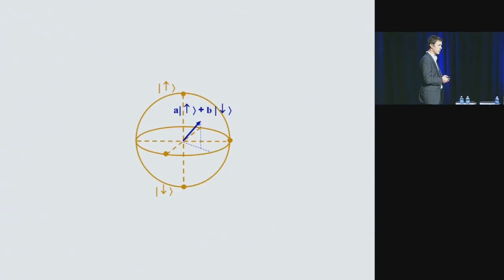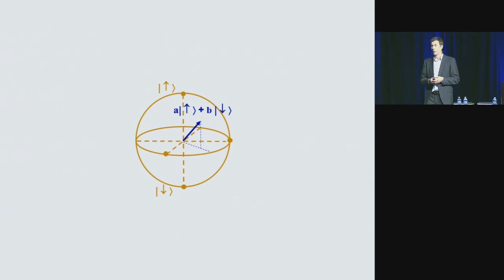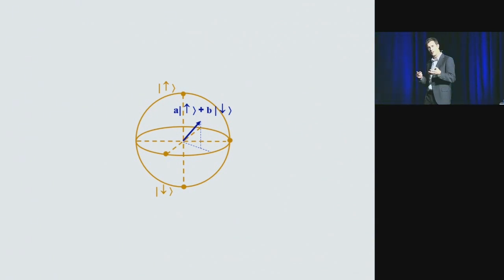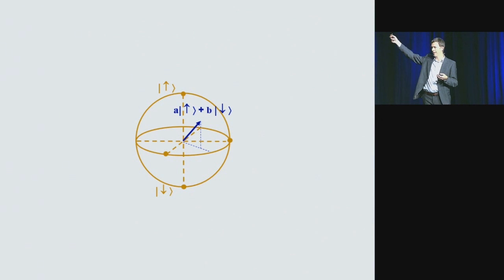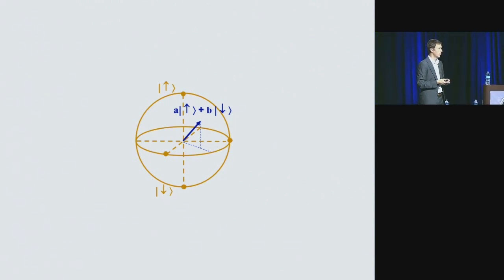The spin we spoke about 19 years ago can be thought of as the tiniest possible magnet — one that can be aligned with an external magnetic field, which we call spin-up, or opposed to it, spin-down. In quantum physics, we denote these states with bracket notation to emphasize they are quantum mechanical states. A magnet can point in any arbitrary direction, and in quantum language, we write that as a linear combination — a superposition — of up and down. We say the spin is simultaneously spin-up and spin-down.